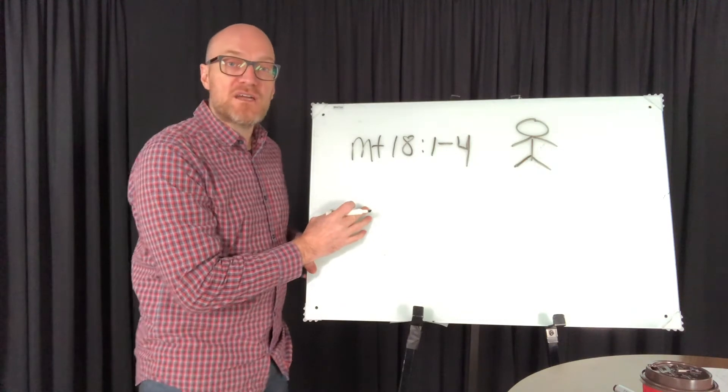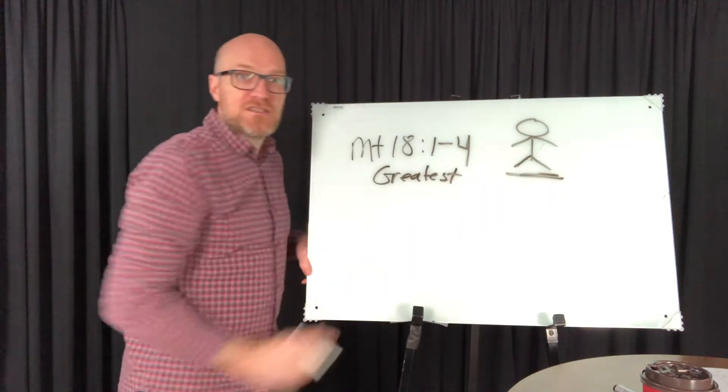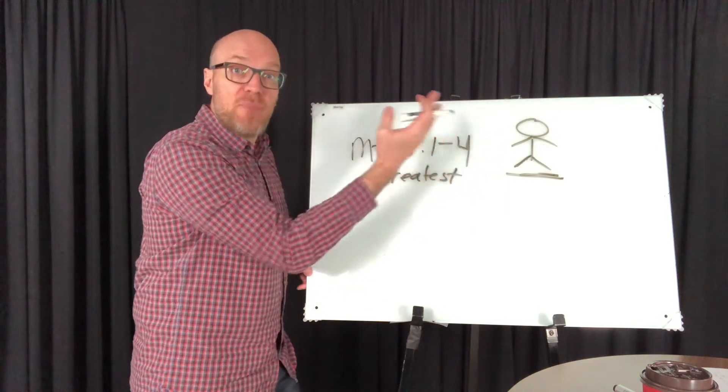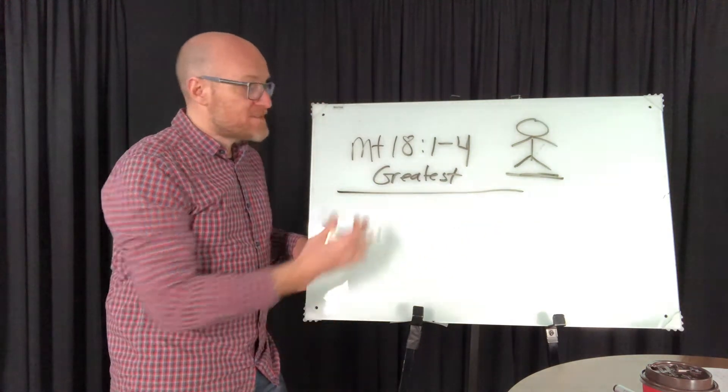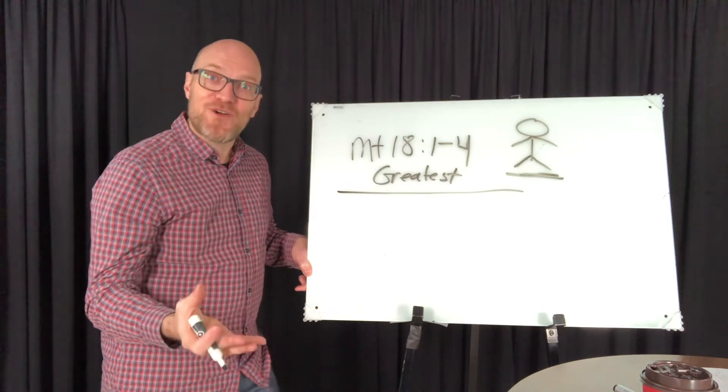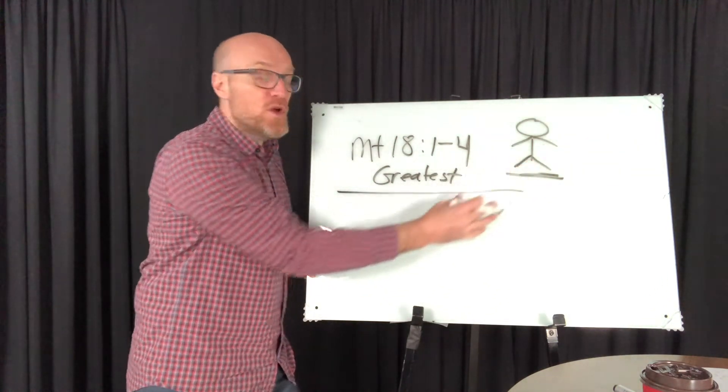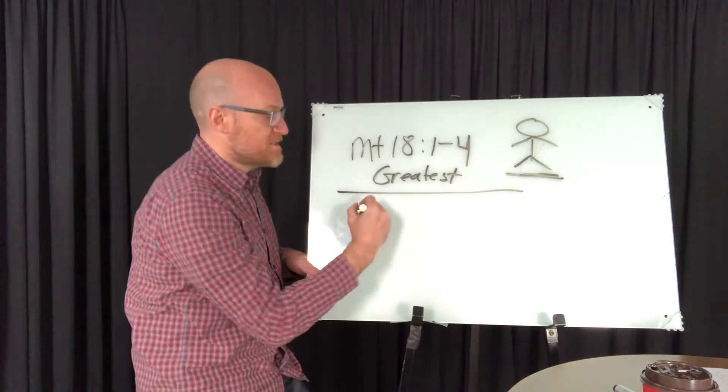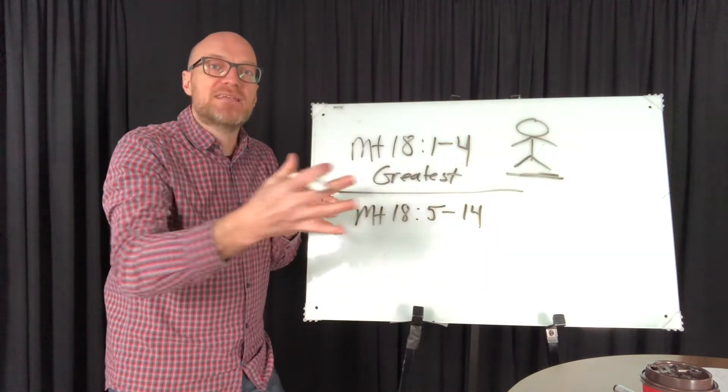Now in verses 5 to 14, we see a shift take place from the topic of who is the greatest. But there's still a connection to this object lesson. The connection is that many will come to know and love Jesus Christ by humbling themselves as a child, and then coming into the kingdom. They are now part of the church. So the shift that takes place from verse 4 to 5 is quite significant.